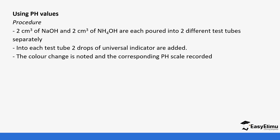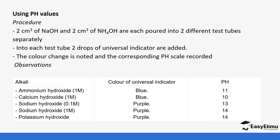pH can also be used to test the strength of alkalis. For example, sodium hydroxide and ammonium hydroxide are placed in separate test tubes and a few drops of universal indicator are added. The colors are noted and the pH scale is used to check the pH value. Ammonium hydroxide shows a pH of 11 with a blue color, calcium hydroxide shows a blue color with pH of 10, while sodium hydroxide and potassium hydroxide show a purple color, indicating a very high pH.